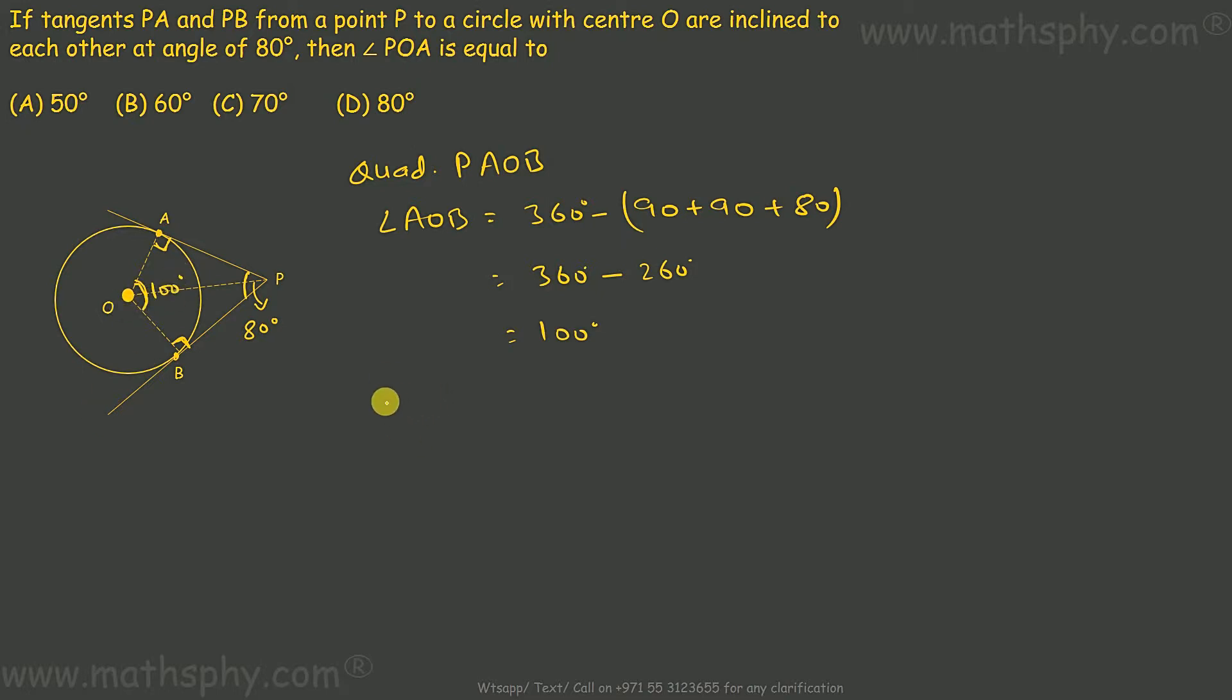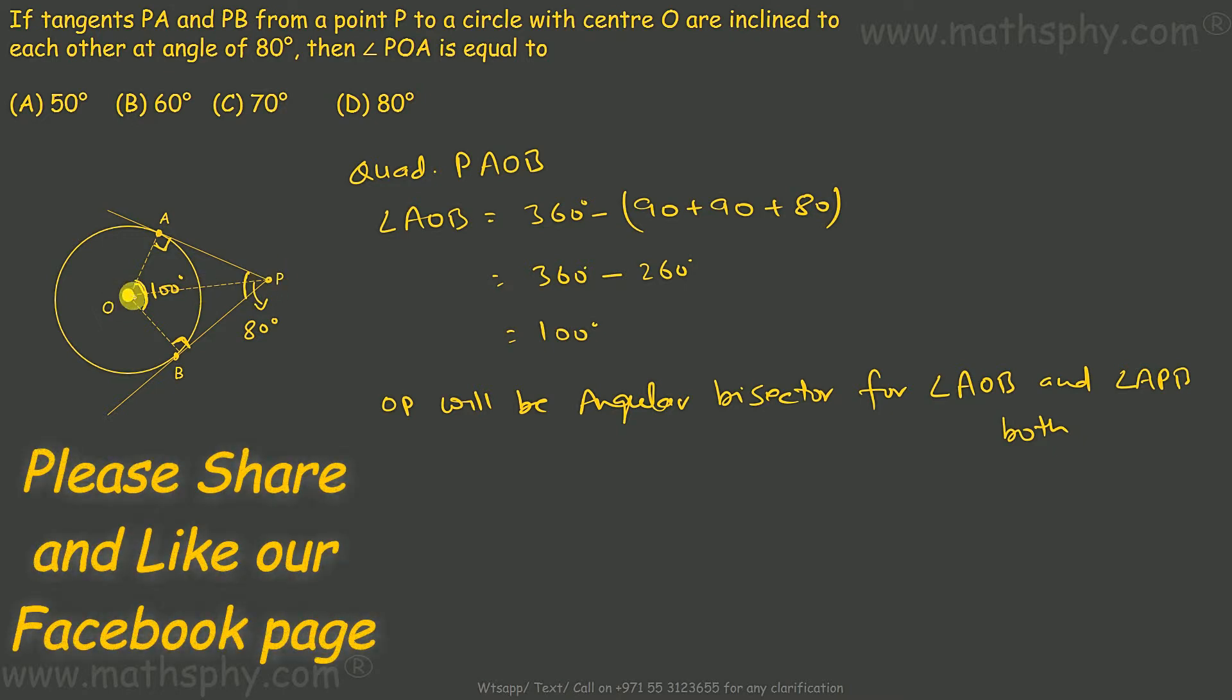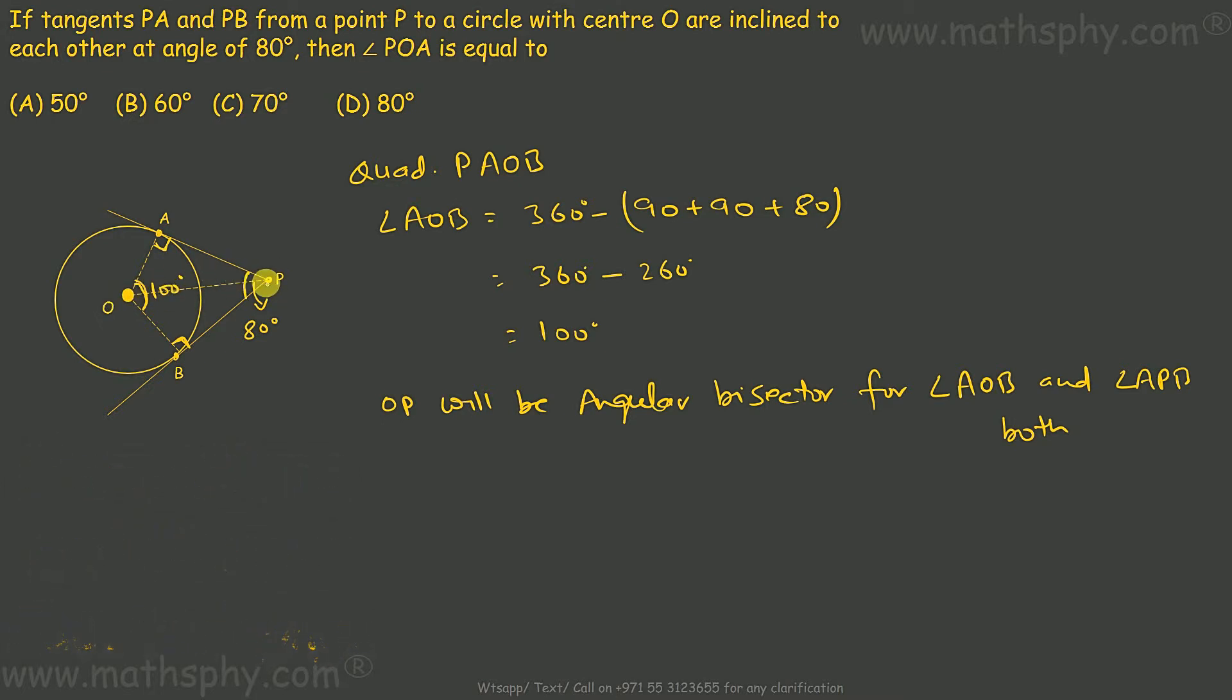Now I know OP will be angular bisector for angle AOB and angle APB both. We know this theorem, when we have two tangents from a common point of origin, then the line connecting the center of the circle to the point of origin of the tangent, that line bisects this angle here and this angle here.